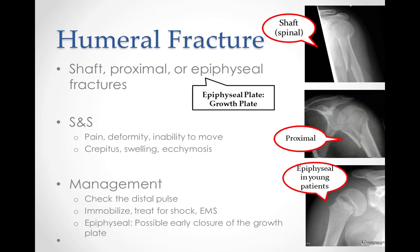Distal humeral fractures can be very painful and may prevent the patient from moving their elbow. Additional symptoms include swelling, bruising, pain or tenderness to the touch, stiffness, feeling of instability, or feeling like the elbow wants to pop out, or pieces of the bone may be stuck out of the skin, but this is rare. Management should include checking the distal pulse, immobilizing and treating the patient for shock, activation of EMS, and in young patients, suspect an epiphyseal fracture, which occurs at the growth plate.